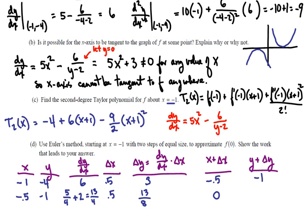And so we estimate that f of 0 will be 5 eighths using Euler's method here. And that wraps up this problem.